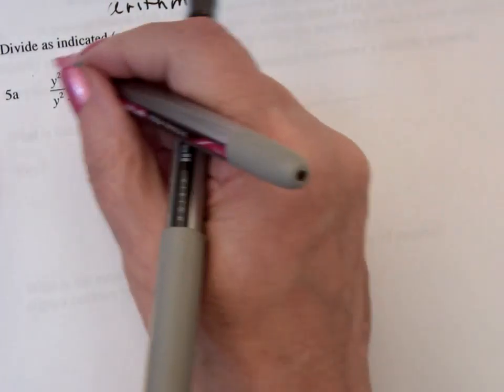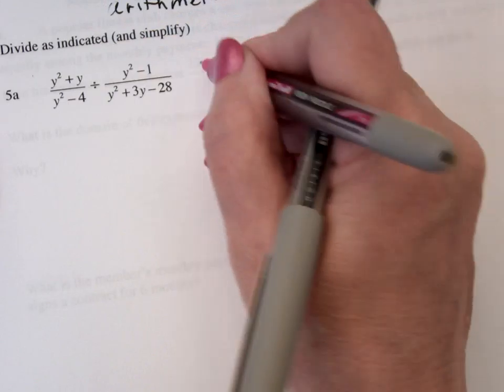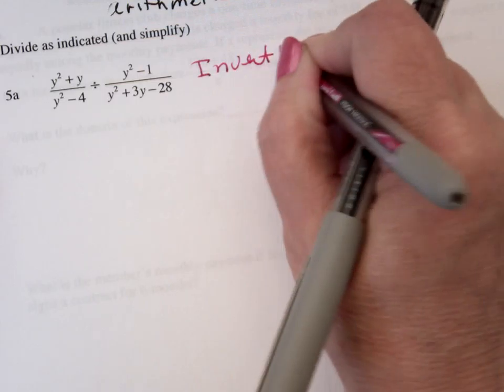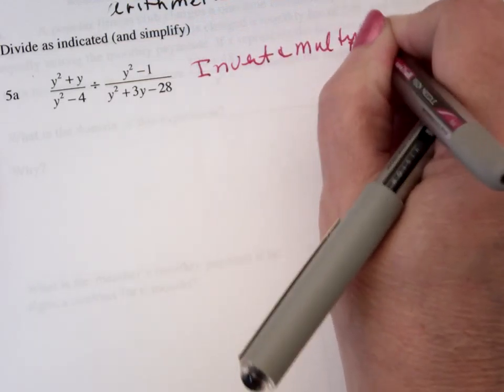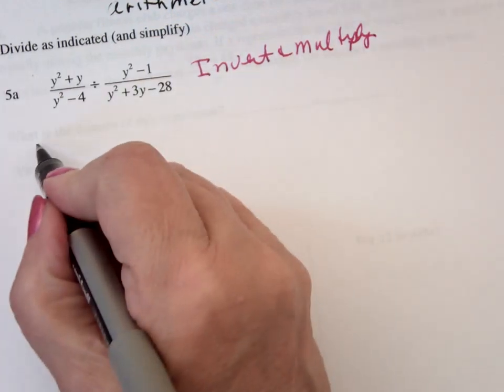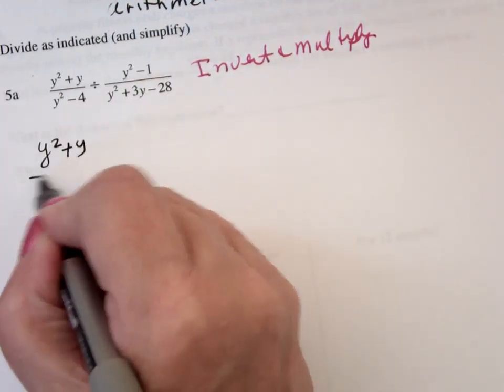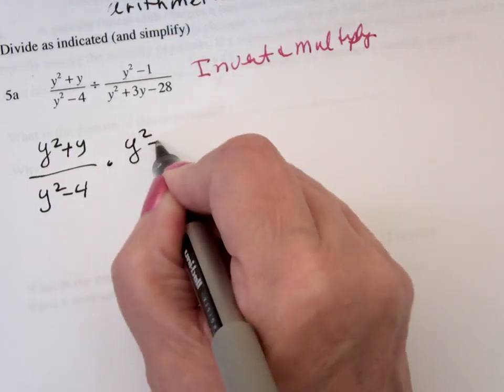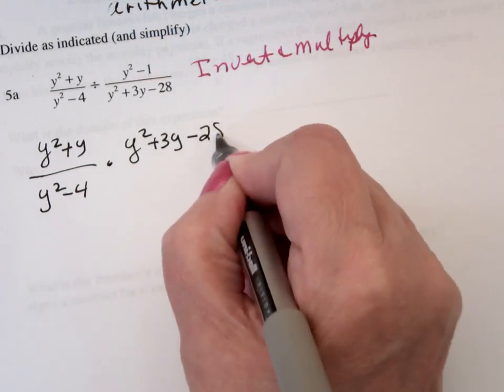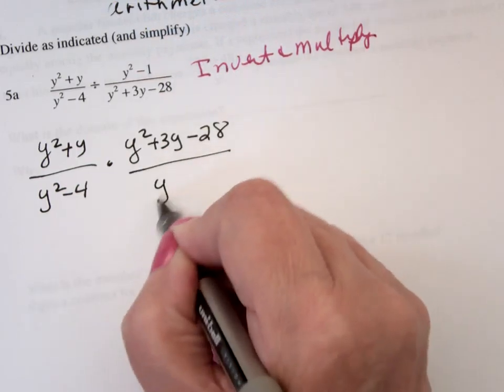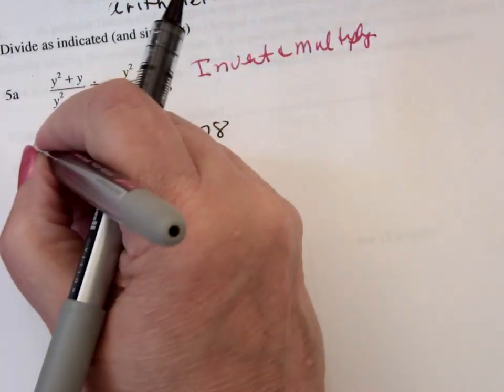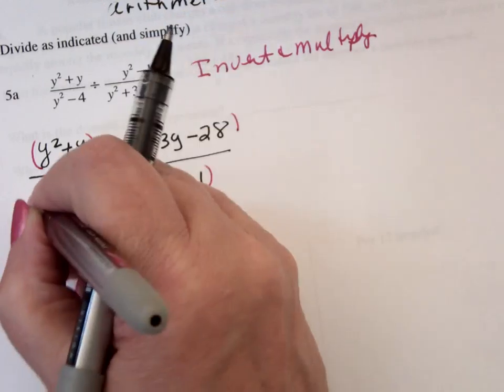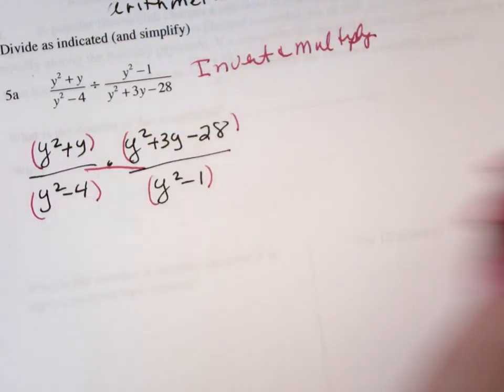So here is a fraction divided by a fraction. The first thing that I want to do is to invert and multiply. So I'd end up with y squared plus y over y squared minus 4 times y squared plus 3y minus 28 over y squared minus 1. And grouping, just like we did last time, and then when you multiply, it becomes one thing.